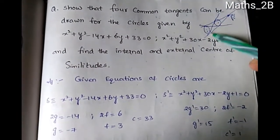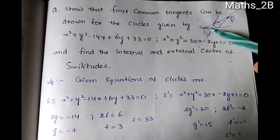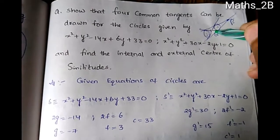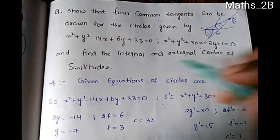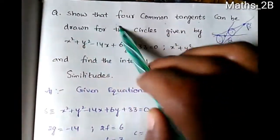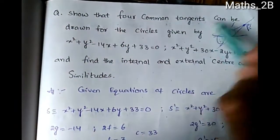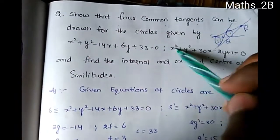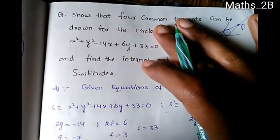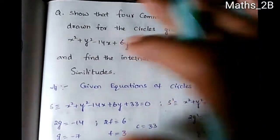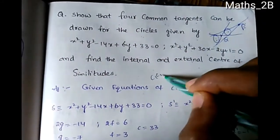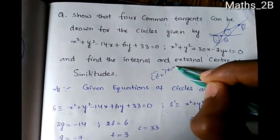If you have a transverse common tangent, you can see it here. If we have point Q, the transverse common tangents intersect at the internal center of similitude. The condition to draw four common tangents is that the C1C2 distance must be greater than R1 plus R2.